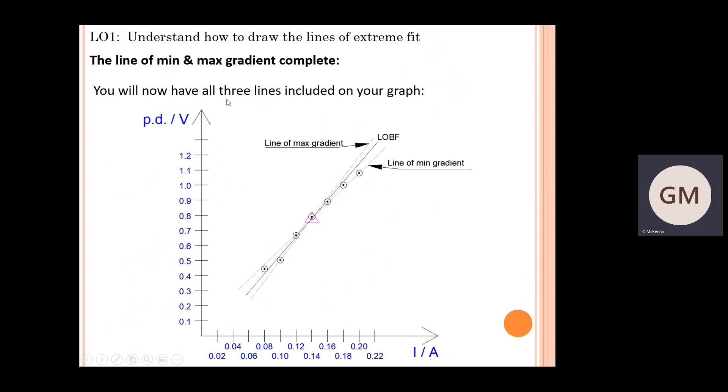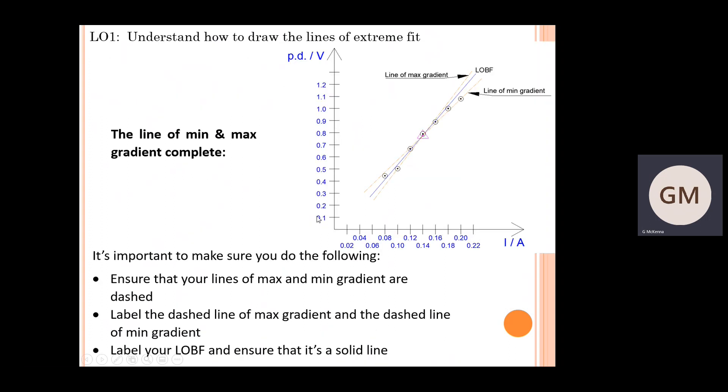At this stage, we have all three lines plotted on the graph and we're pretty much finished the first part of this tutorial. Just a couple of things to stress: ensure that your lines of max and min gradient are dashed. You can see that clearly in the diagram—it's easy when they're color-coded here in blue and orange in AutoCAD, but of course you're using a pencil and all lines will be standard gray. So dashed is super important.